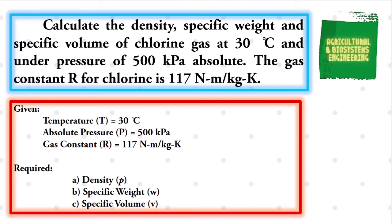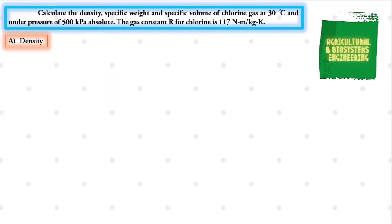After identifying the given and the required, we can now proceed to our solution. The first value we are going to solve is the density. To solve for that, we will use the formula: density equals the quotient of P over the product of R and T, where P is pressure, R is the gas constant, and T is temperature.